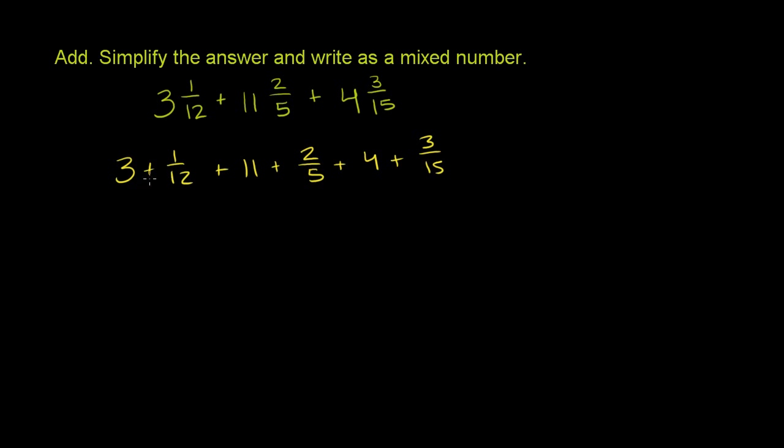Since we're just adding a bunch of numbers, order doesn't matter, so we could add all the whole numbers at once: 3 plus 11 plus 4. And then we can add the fractions: 1/12 plus 2/5 plus 3/15.